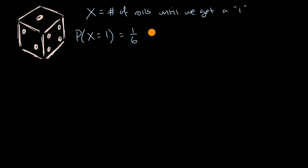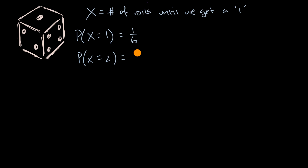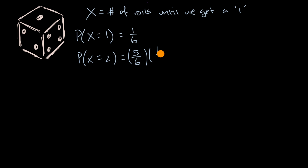What's the probability that X is equal to two? That means on the first roll we get something other than a one, so that is five-sixths. And then on the second roll we get a one, so that has a one-sixth probability.